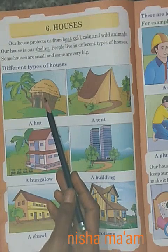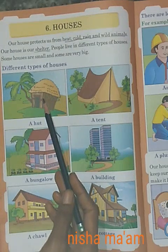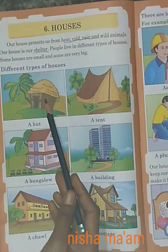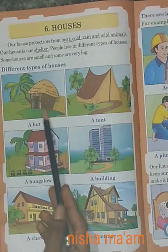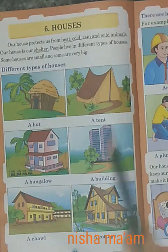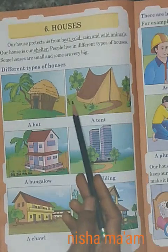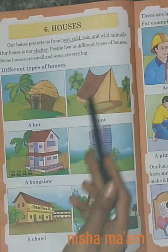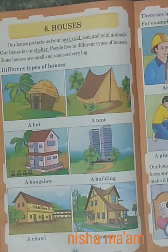See, this is a hut. किससे बना — लकड़ी, घास, इन सब से बना है। Tent — ये किससे बना है? ये खिली डाली है मिट्टी में और cotton से। ये tent बना है।